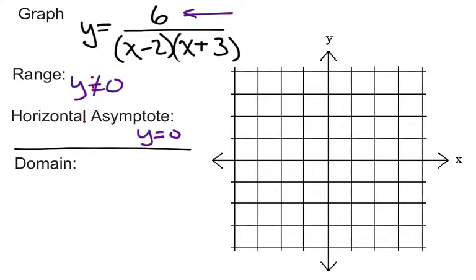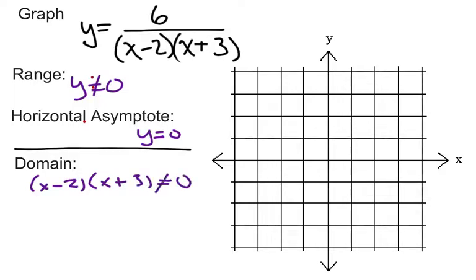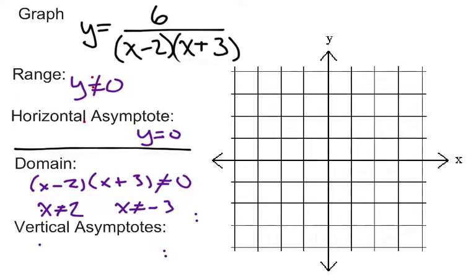Now when it comes to the domain, we need to worry about the denominator. We know with all rational functions, we can't let the denominator — (x minus 2)(x plus 3) — equal 0. We never want it to equal 0. So that means x can't equal 2 and x can't equal negative 3. And that's how we're going to get our vertical asymptotes: x equals 2 and x equals negative 3.